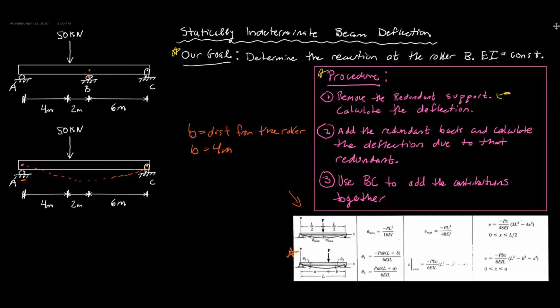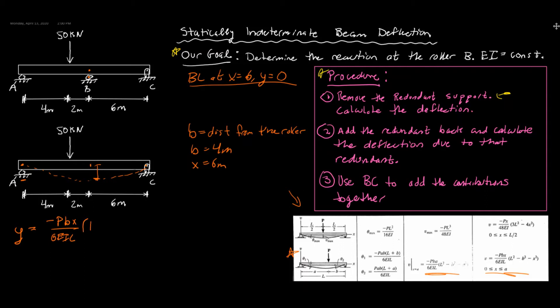We want to find the deflection at point B, so X equals six meters. The reason we want to find it here is because we know as a boundary condition that since we have a support at B at X equals six, our deflection is going to be equal to zero. So let's plug into the equation: Y equals negative P times B times X over 6EI times L, times L squared minus B squared minus X squared.